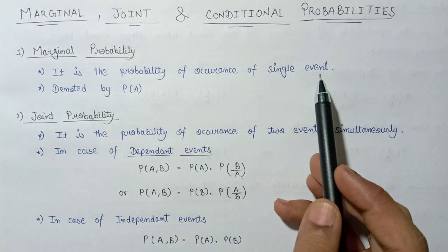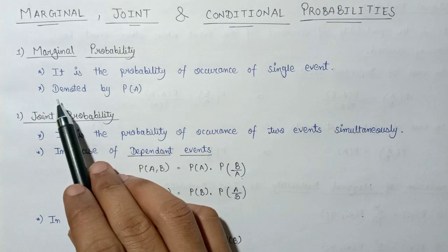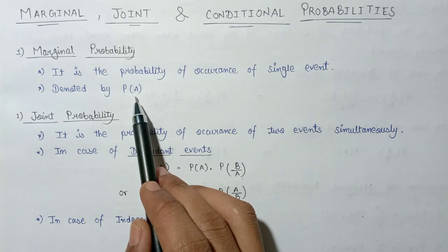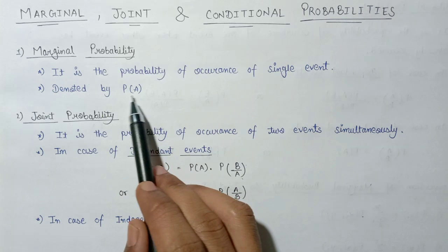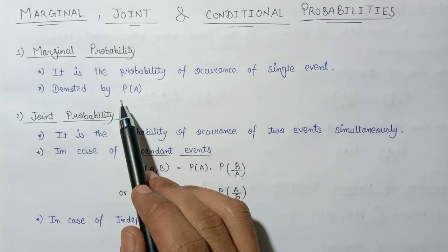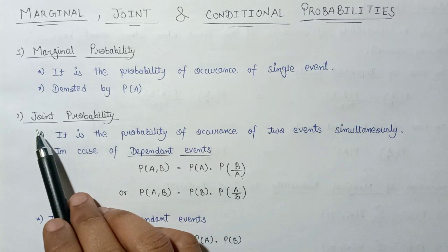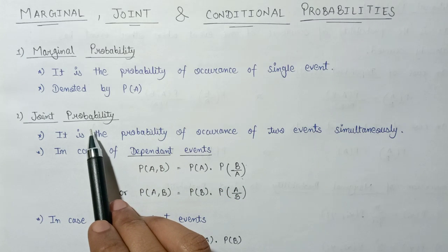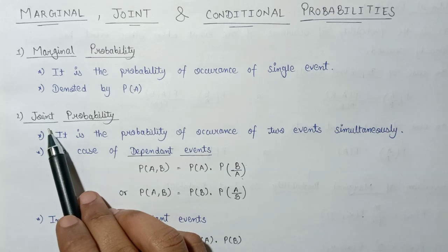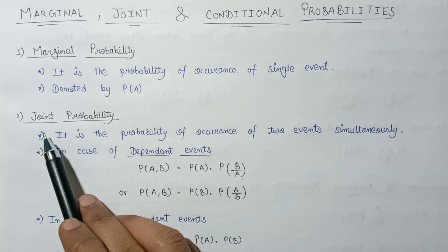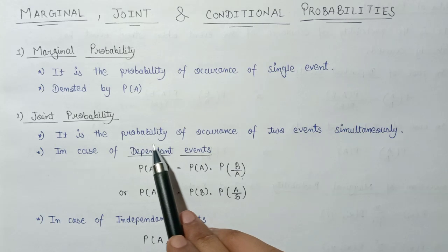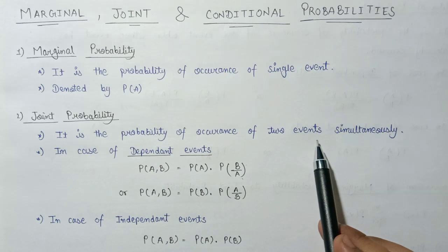Let's discuss the first point: marginal probability. It is the probability of occurrence of a single event only, denoted by P(A), where A is the event to be occurred. The second type of probability is joint probability. As its name suggests, joint means more than one.